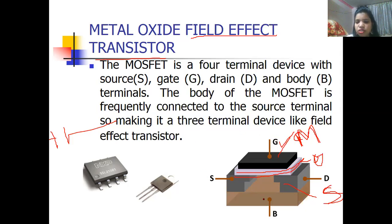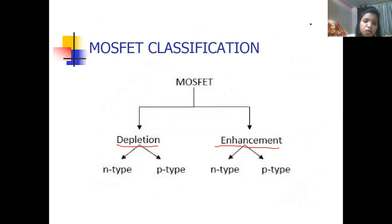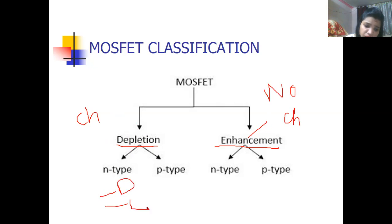MOSFET has four terminals: gate, source, body, and drain. In MOSFET classification, there are two types: depletion type MOSFET and enhancement type MOSFET. The basic difference is that in depletion type MOSFET, a channel exists during fabrication, but in enhancement type MOSFET, there is no channel during fabrication. In enhancement type MOSFET, only enhancement mode exists.